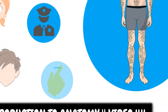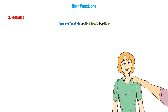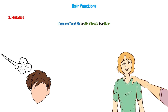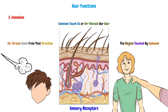The third function is the sensation. So when someone touches us, or air comes to vibrate our hair, these vibrations will be received by the sensory receptors in the hair follicles and in the skin. As a result, it will make us feel that this region was touched by someone, or that the air stream comes from that direction.